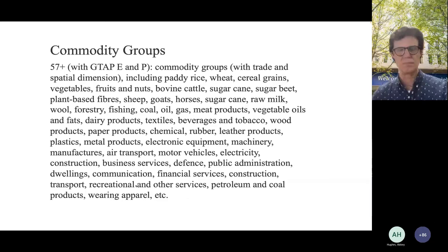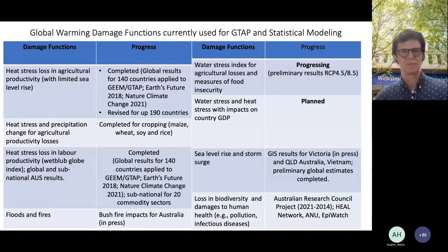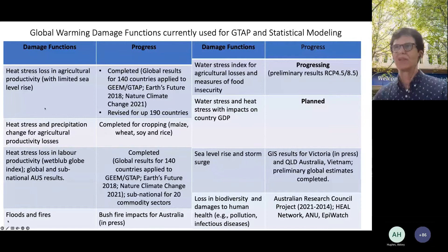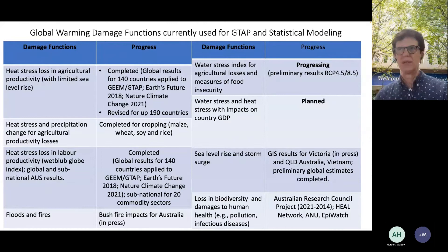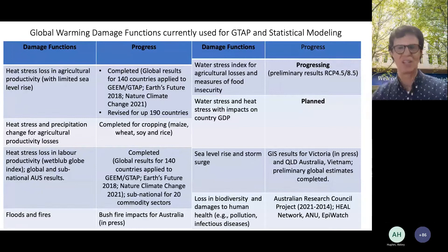To get this model to work, you have to introduce climate change damage functions. The damage functions we're working on include heat stress and agricultural productivity losses — looking at heat stress in terms of losses in yield, which has been peer reviewed and published — as well as effects of heat stress and precipitation changes on agricultural productivity, and heat stress and labor productivity using wet bulb globe indices. These first three are all being fed into this SEBRA project model.